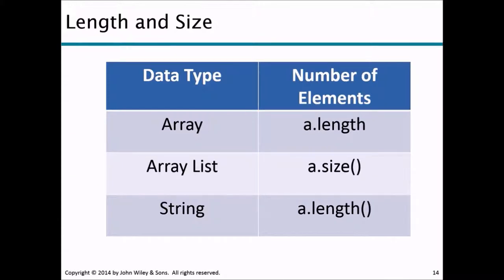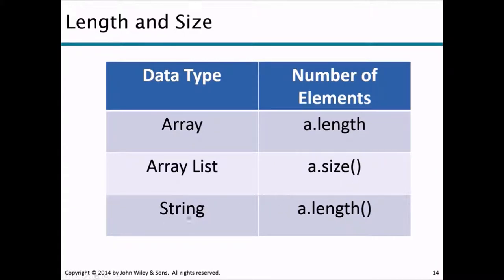Comparing three data types studied in this class — Arrays, String, and ArrayList: to find the length of an Array, use the length property (e.g., a.length) — no parentheses, because length is a property, not a method. For a String, use the length method: a.length(). For an ArrayList, use the size method: a.size(). On your AP test, remember: Array uses length (property), ArrayList uses size (method), and String uses length (method).